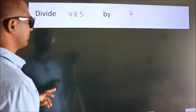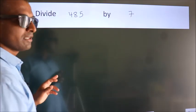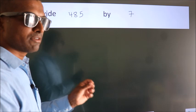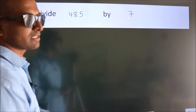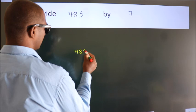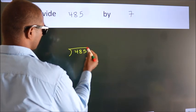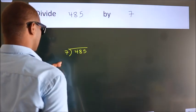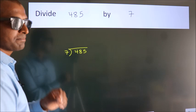Divide 485 by 7. To do this division, we should frame it in this way: 485 here, 7 here. This is your step 1.